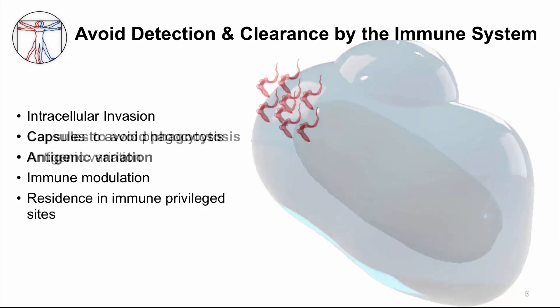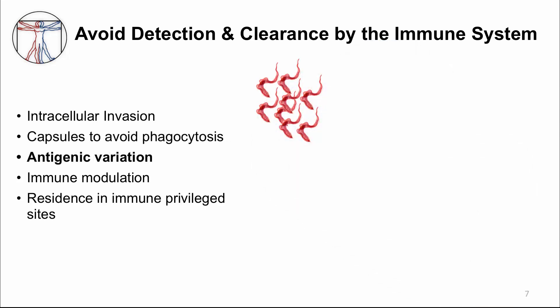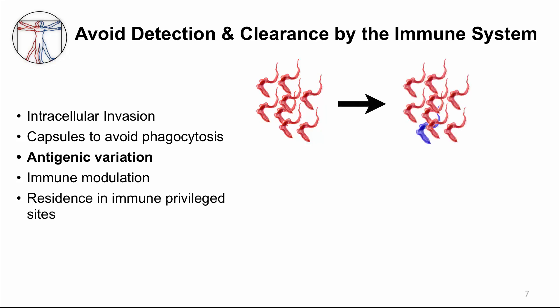A third way to avoid clearance by the immune system is not to hide the surface antigens, but to continually change them. This is called antigenic variation. For example, these red squiggles represent trypanosomes, which is a type of parasite that infects blood. It can persist for a long time.